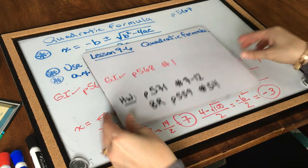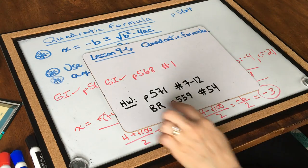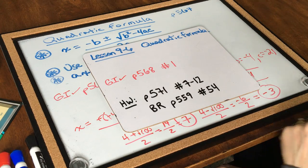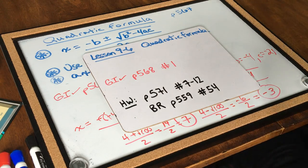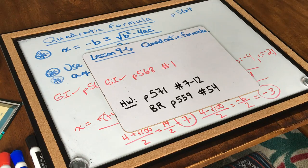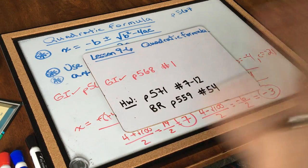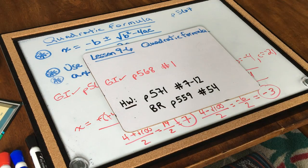It's time to try your homework: page 571, numbers 7 through 12, and your bell ringer is page 559 number 54. See you later, eighth grade.